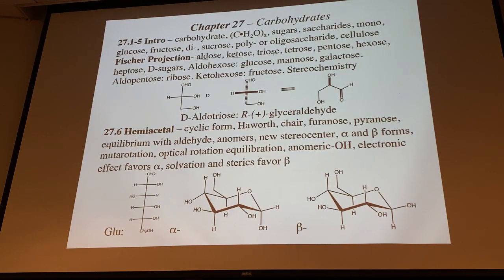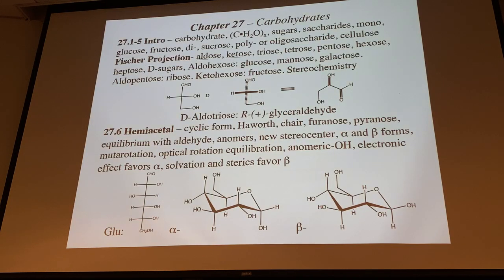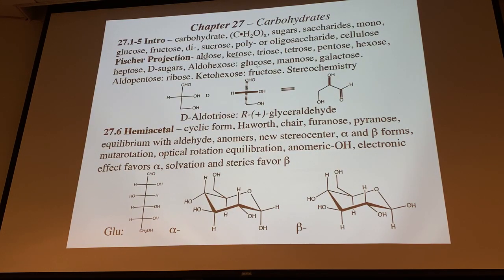Triose means three carbons — glyceraldehyde is a triose. Then there are tetroses, pentoses, and hexoses, which are probably the most common class and include glucose. There are also higher-order sugars: heptoses, octoses, and nanoses. In nature on Earth we have the D-series sugars. The enantiomeric L-series would be the mirror-image form. The aldohexoses include several you need to memorize, and we'll work through their structures.